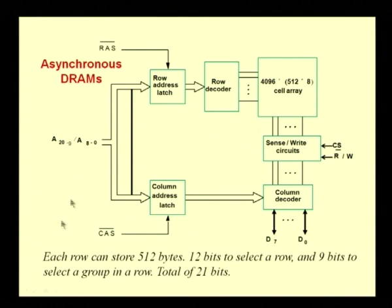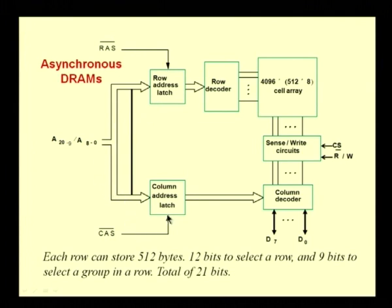The data is essentially stored as a cell array and addressed by specifying a row address separately and a column address separately. The row and column addresses are multiplexed on the same address lines. We first send the row address and latch it using a row address signal, then send the column address and latch it using the column address signal. Once both have been latched, the row decoder and column address decoder will decode the lines, select the particular row and column, and then the data is read or written through the sense and write circuits.